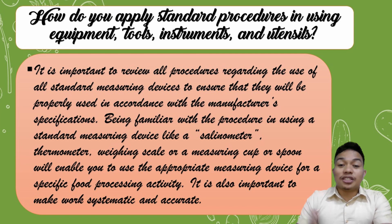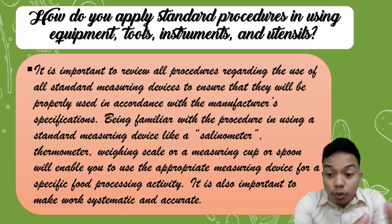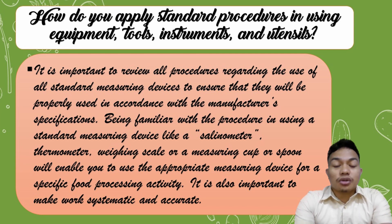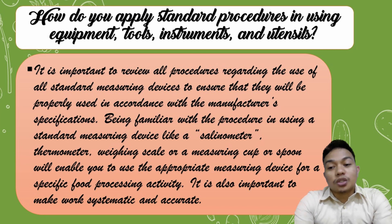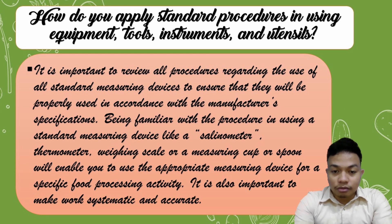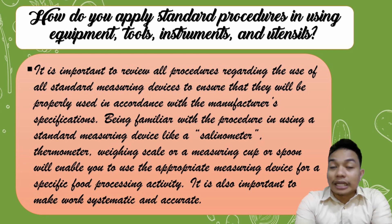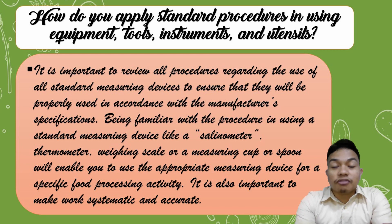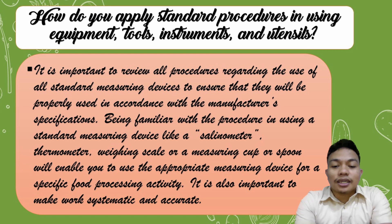It is important to review all procedures regarding the use of standard measuring devices to ensure that they will be properly used in accordance with the manufacturer's specifications. Being familiar with the procedure in using standard measuring devices — like salinometer, thermometer, weighing scale, or a measuring cup or spoon — will enable you to use the appropriate measuring device for a specific food processing activity, and it is also important to make work systematic and accurate.